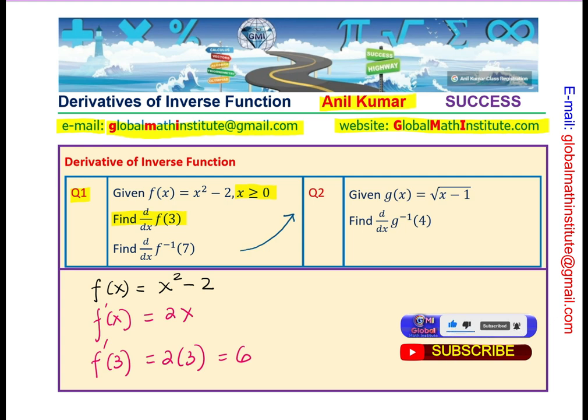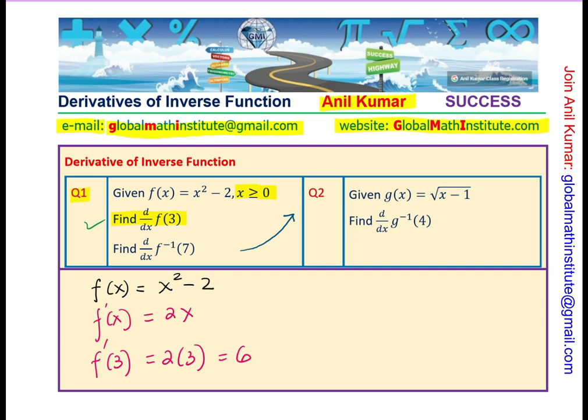We have done one part of the problem, which is how do we find derivative at f prime of 3. Second part is to find derivative at inverse of 7.